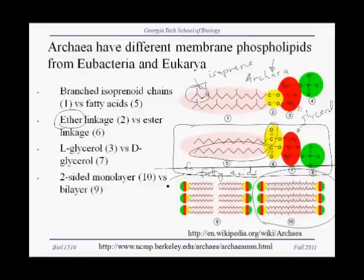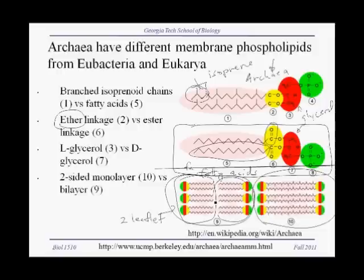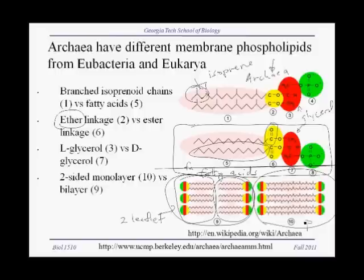So instead of having a lipid bilayer consisting of two leaflets — where one leaflet and a second leaflet interact because their hydrophobic tails interact with each other — in archaea it is essentially a monolayer with hydrophilic groups on both sides. This type of structure is going to be much stronger and more resistant to environmental stress than the bilayer leaflet structure. Archaea tend to inhabit extreme environments, and therefore this type of lipid in their membranes is undoubtedly of adaptive significance.